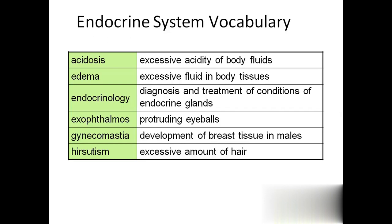Acidosis is nothing but excessive acidity in our body fluids, mainly blood and edema. Edema means if any part is edematous, the size of that part will become big - for example, the size of the leg or hand. The tissue fluid will be stored in that place because of poor drainage in the lymphatic system; it will not go back to the venous system. That condition we call edema - excessive fluid in the body tissues.